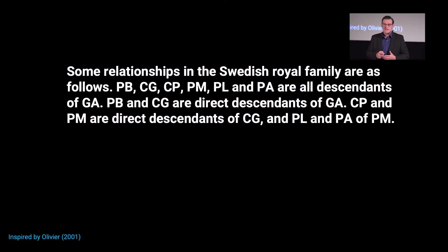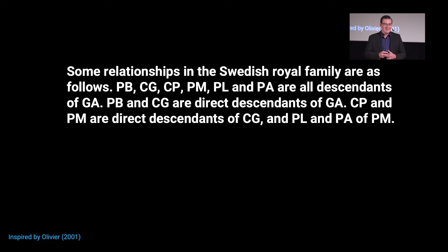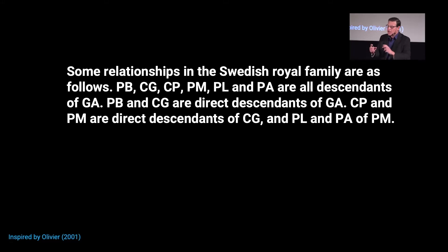How does the visual system work? Before you, you have a linguistic representation of elements of the Swedish royal family in four generations. This representation is one-dimensional — to interpret it, you have to interpret it as a sequence. It's a one-dimensional representation of knowledge, and as you read it, slowly you build up a mental representation of what it might mean.